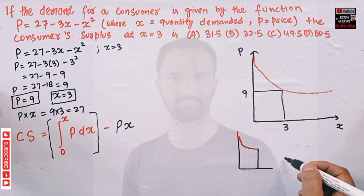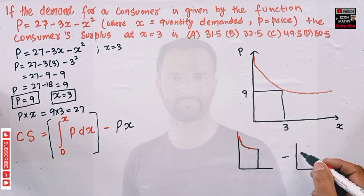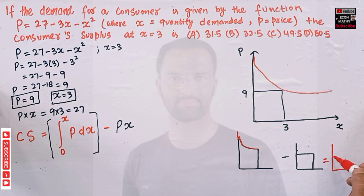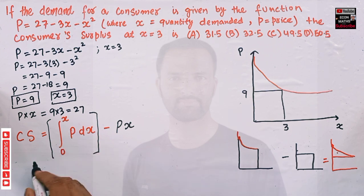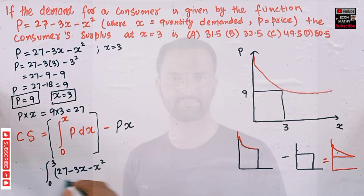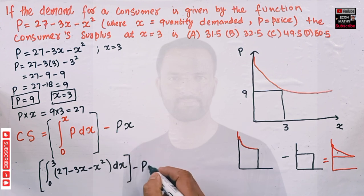Graphically, the integral gives the full area under the demand curve. From that we subtract the total expenditure — price times quantity, which is 9 × 3 = 27 — and we get the consumer surplus area. Now plugging in values: the definite integral from 0 to 3 of (27 - 3x - x²) dx, minus the total expenditure of 27.